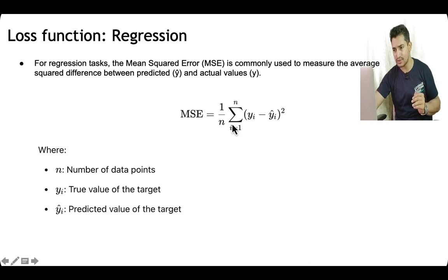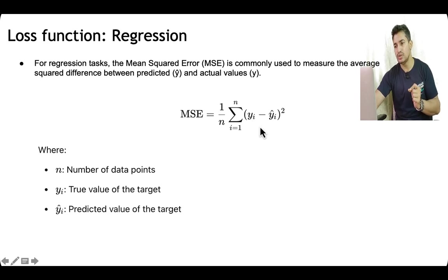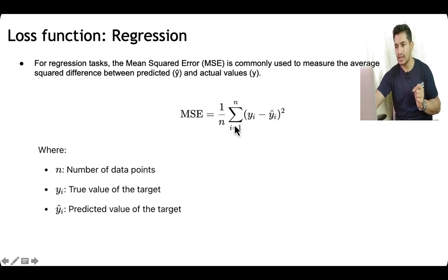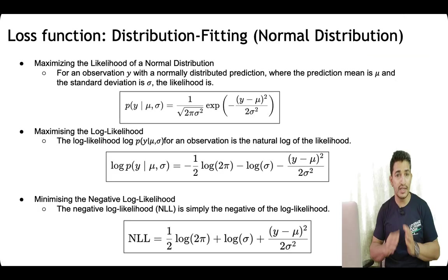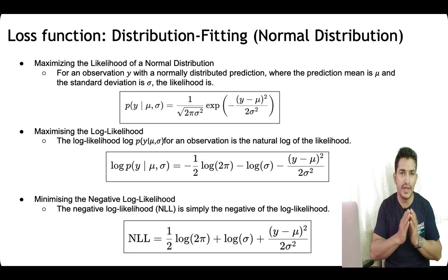In the regression approach, we try to minimize the mean squared error — we ensure that the prediction is as close to the true value as possible, where yi is the true value and y-hat is the predicted value; we want the loss to be minimum. The other approach is distribution fitting, where we first need to make an assumption about which distribution the data follows.